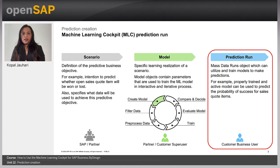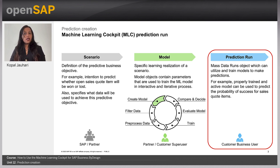Prediction run and scenario share the same data source. The exact set of data used for prediction can be specified by the prediction run filter conditions. You can define only one prediction run for a scenario. So if you deactivate one model and activate another model of the same scenario, you need not create a new prediction run. In this case you can run the same prediction run to update the prediction results.